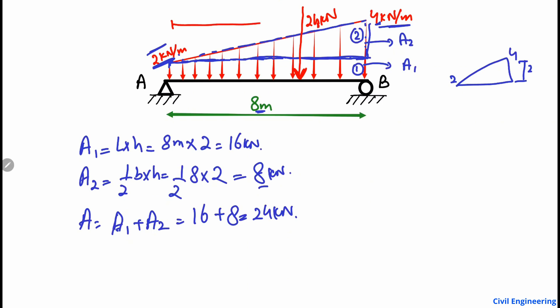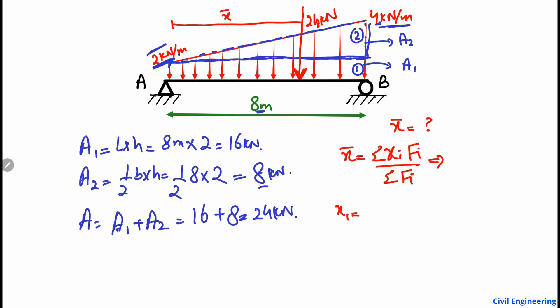The next step is to find the distance x̄, the centroid of the combined load from support A. This is important because we will use the moment equation for this load. The centroid x̄ equals the summation of (xᵢ × fᵢ) divided by the summation of fᵢ. For the rectangle, the centroid x1 = 8/2 = 4 meters.